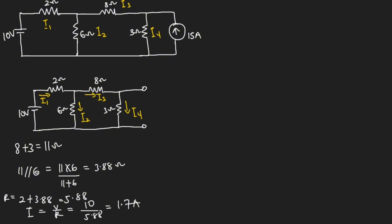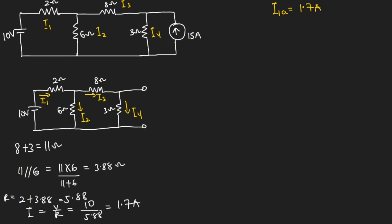So 1.7 amperes is the current that will flow through the 2 ohms and the 3.88 ohms. We know the current flowing through the 2 ohms is labeled I1, so I1A will be equal to 1.7 amperes. The current flowing through the 3.88 will also be 1.7 amperes. We got the 3.88 as a result of the 11 and 6 ohms being in parallel.